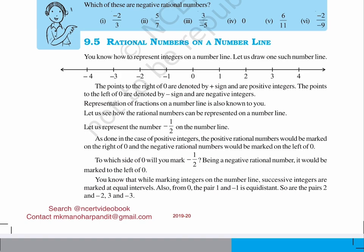You know how to represent integers on a number line. Let us draw one such number line. The points to the right of 0 are denoted by a plus sign and are positive integers. The points to the left of 0 are denoted by a minus sign and are negative integers. Representation of fractions on a number line is also known to you. Let us see how rational numbers can be represented on a number line.